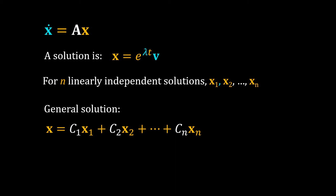If a system has n linearly independent solutions x1, x2, up to xn, then the general solution is x equal to c1 times x1 plus c2 times x2, up to cn times xn. All these constants are calculated from the initial conditions. Note that x is the position vector of the system, so the general solution gives the time trajectory of the system on the phase space. This generalized solution also shows the stability of the steady state.